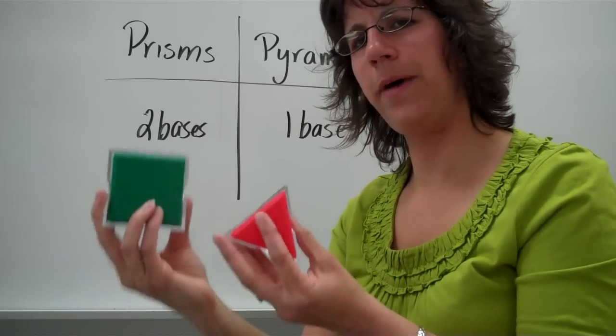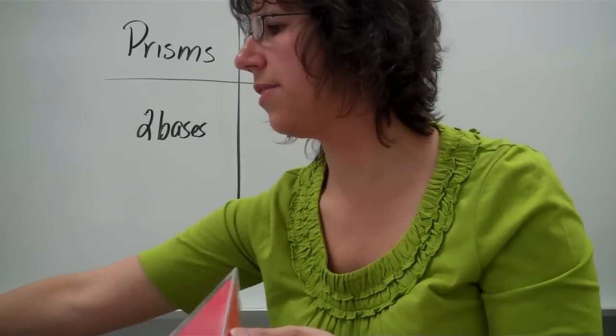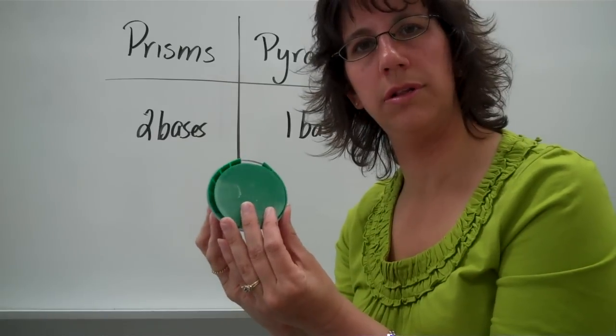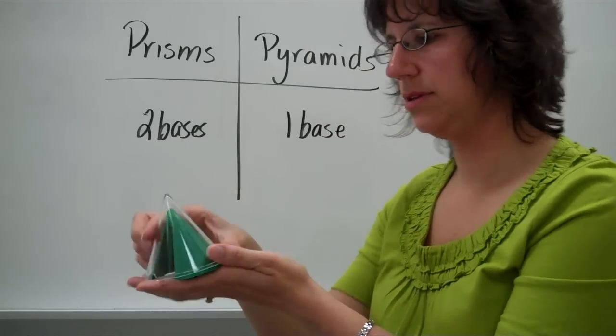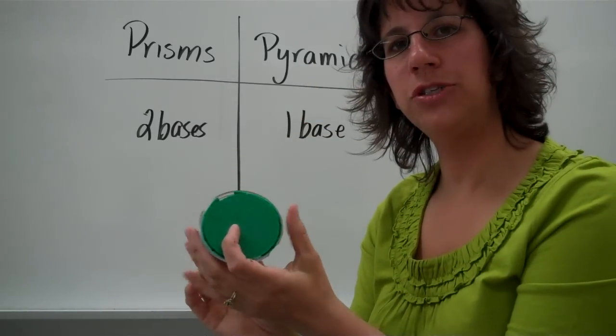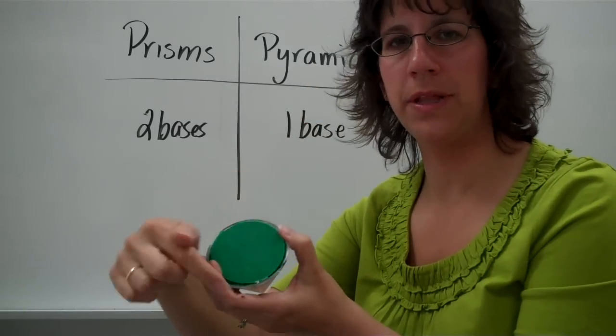Now, what happens if the bottom is a circle? Do you know what you call that? Good. A cone. The bottom is a circle. It's one base. One base. So it is a pyramid.